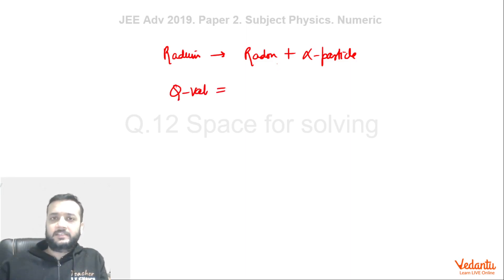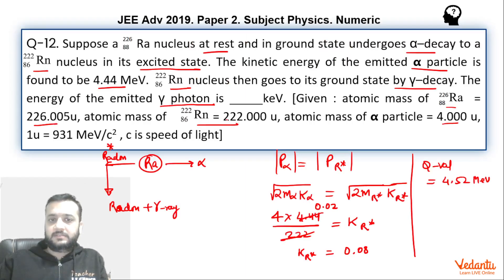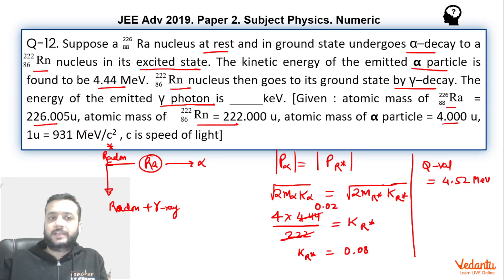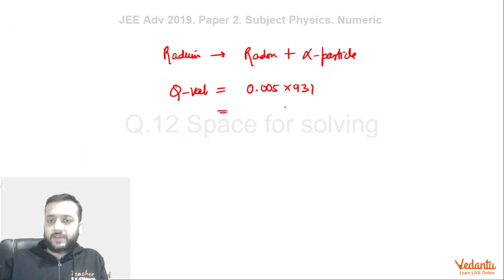We can find this by using the mass difference of the reactant and the product. So we can simply write mass of radium minus mass of radon minus mass of alpha particle. The difference will give 0.005. And this must be multiplied by 931 because one atomic mass unit when converted to energy is 931 mega electron volts. So this gives 4.655 mega electron volts Q value.